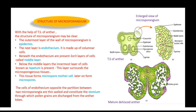There are several cellular layers in the structure of the microsporangium. The outermost layer is the epidermis. The next layer beneath the epidermis is called the endothecium, which is made up of large columnar cells.